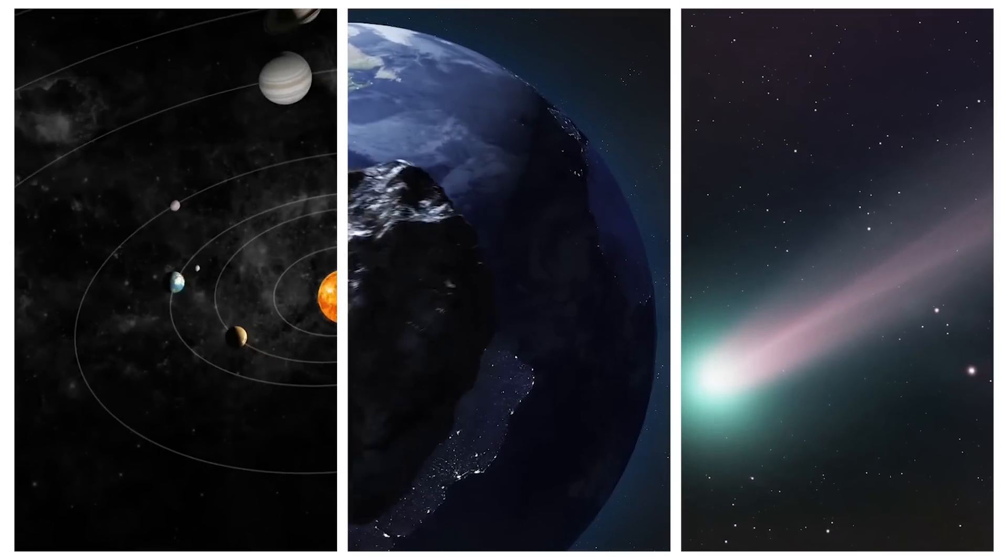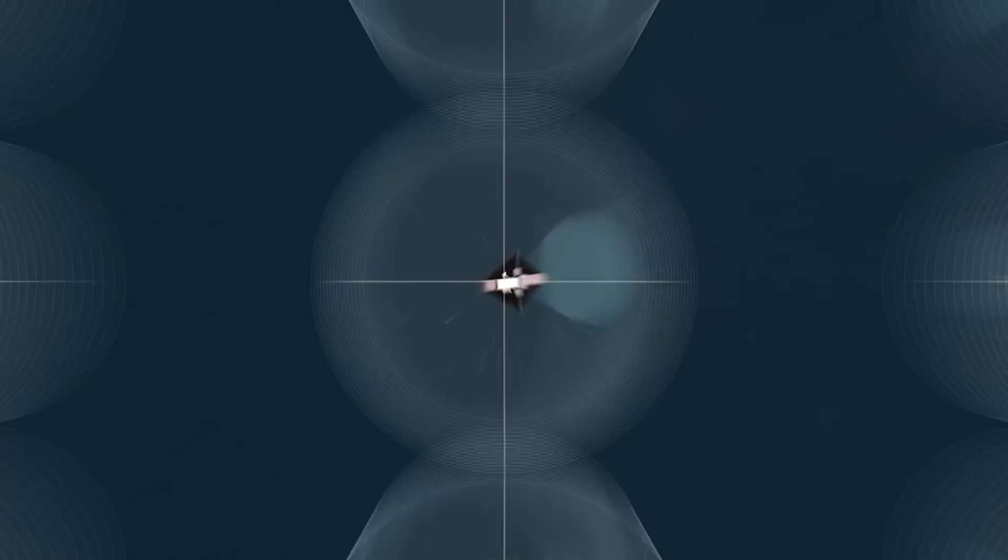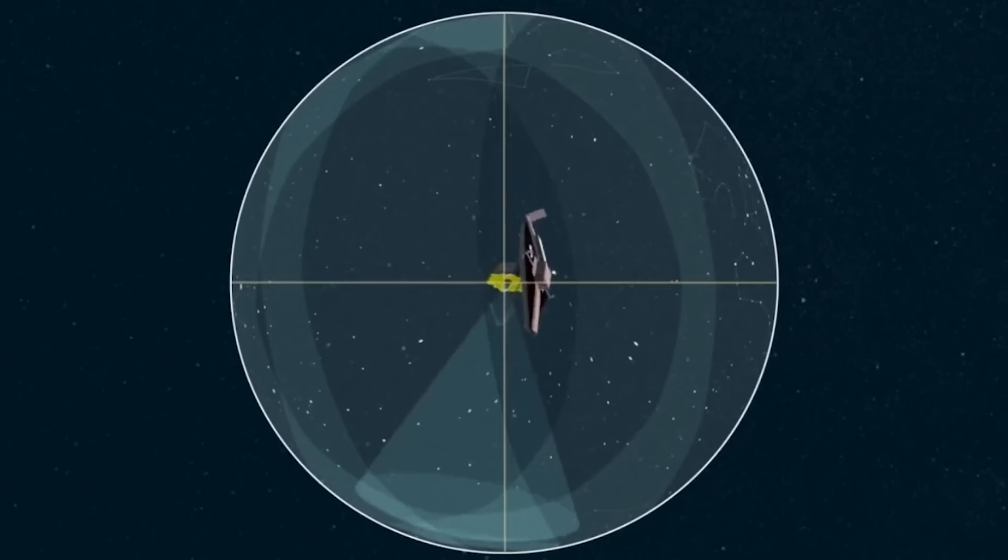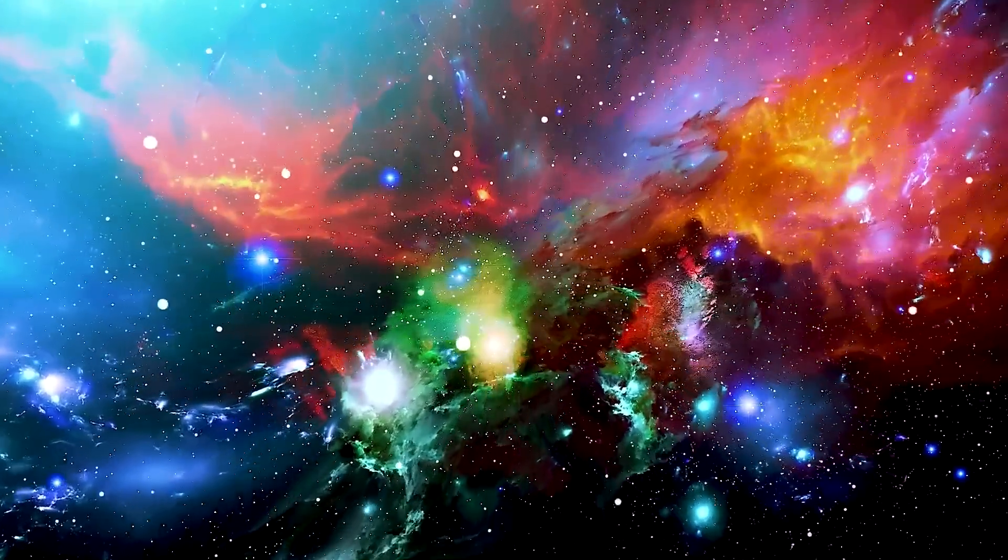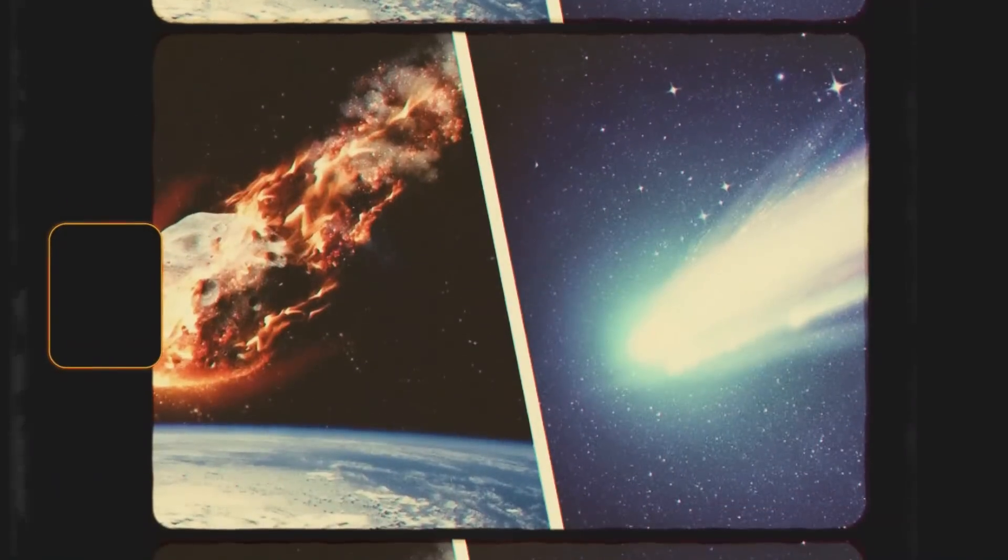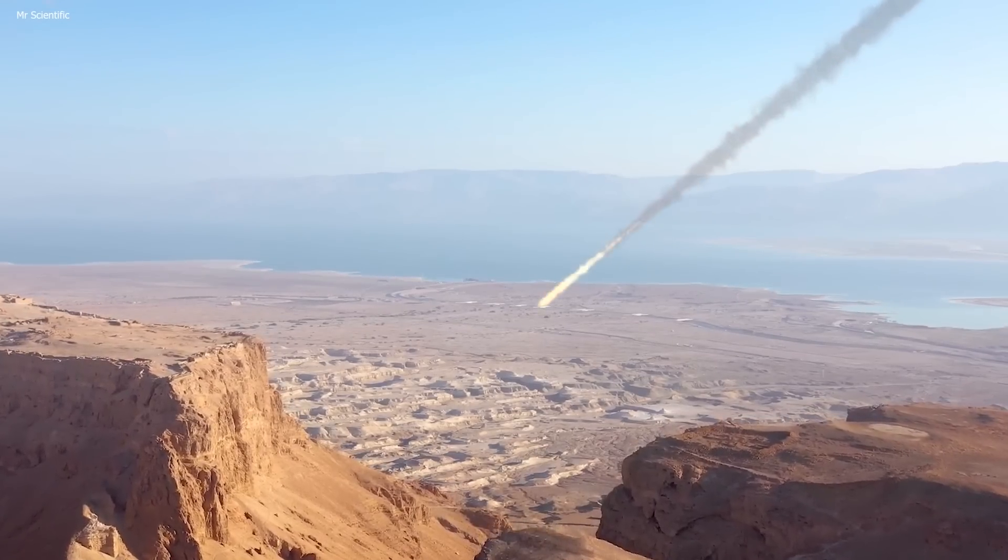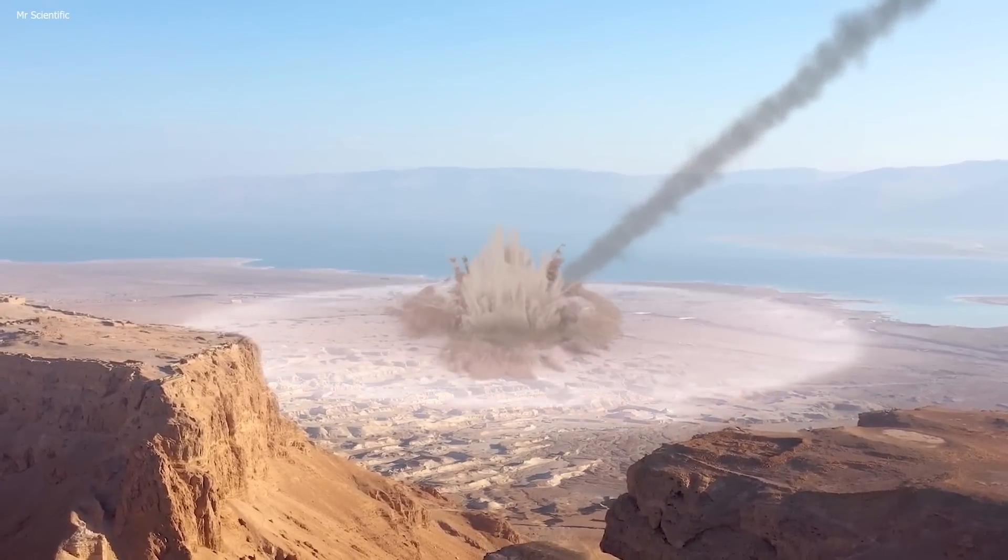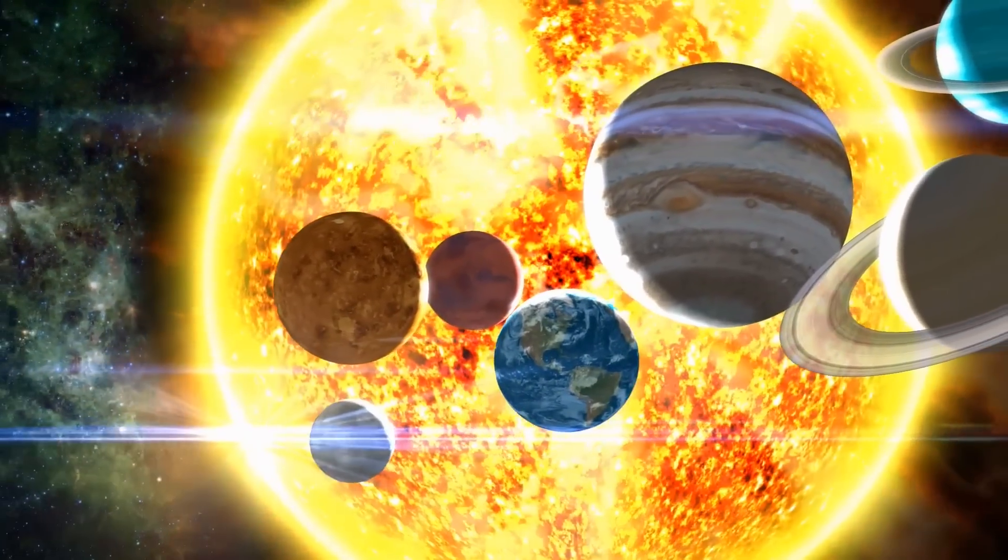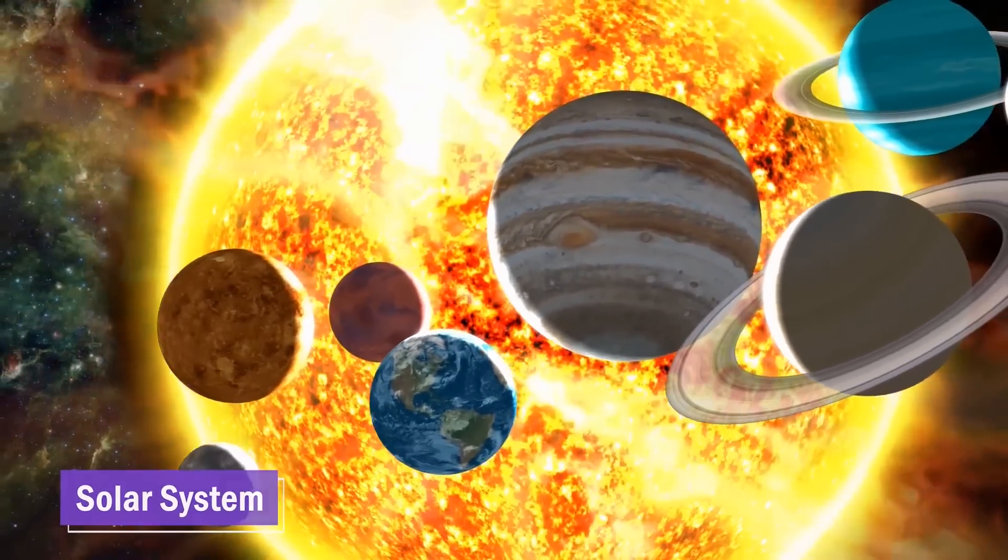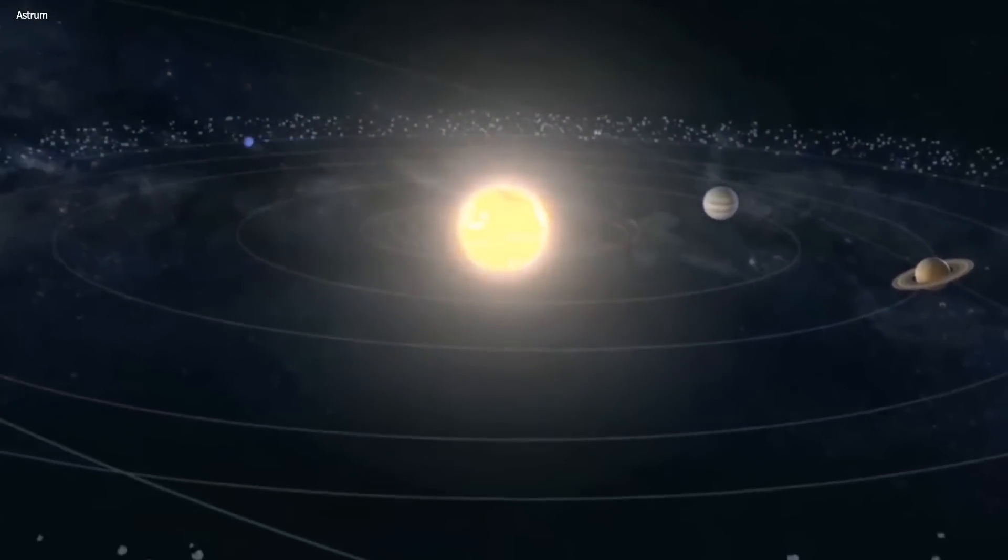One of the fascinating areas of study within our solar system is the exploration of asteroids and comets. JWST meticulously observes these celestial objects, providing valuable insights into their composition, structure, and dynamics. Analyzing the light emitted and reflected by asteroids and comets helps unveil clues about their origins, evolution, and potential impact risks. These observations contribute to our understanding of the formation and evolution of our solar system, shedding light on the processes that shape the planets, moons, and smaller bodies within it.